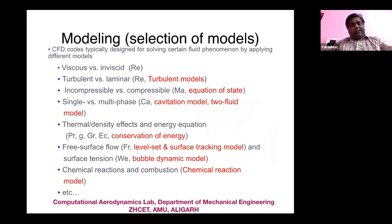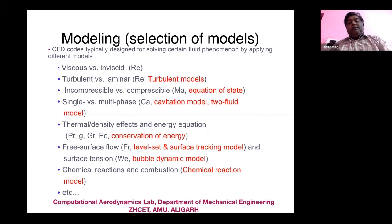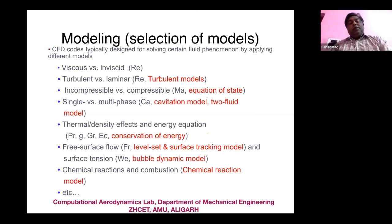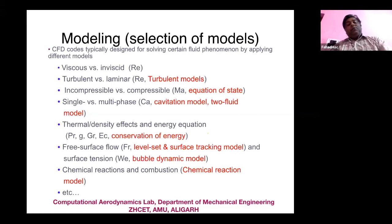Model selection depends on which equations are important for the flow. If the flow is viscous or inviscid, the Reynolds number is important. For turbulent versus laminar flow, turbulence models must be addressed. For inviscid compressible flow, the Mach number is the relevant parameter and the equation of state must be added. For single versus multi-phase flows, cavitation number and two-fluid models apply. For thermal and density gradients, the energy equation is needed with Prandtl number, Grashof number, and Eckert number.